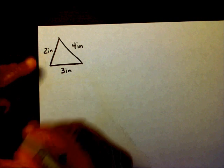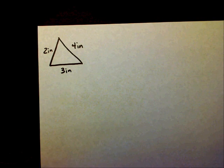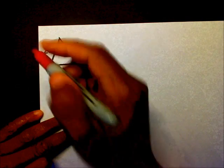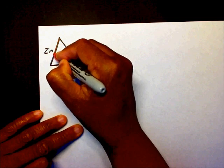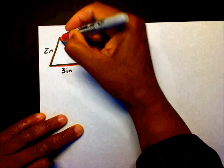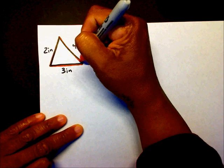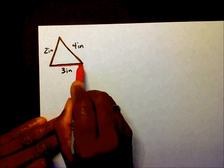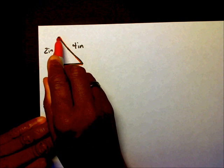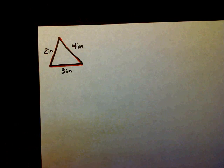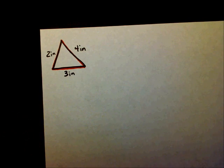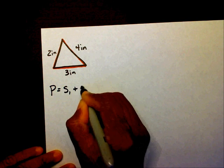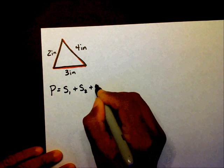My formula — if I want to find the perimeter of this triangle, I need to find out what is the distance of this red part, how far it is from this point around, back to the same point. So that's what we're finding today. My formula is p equals side one plus side two plus side three.